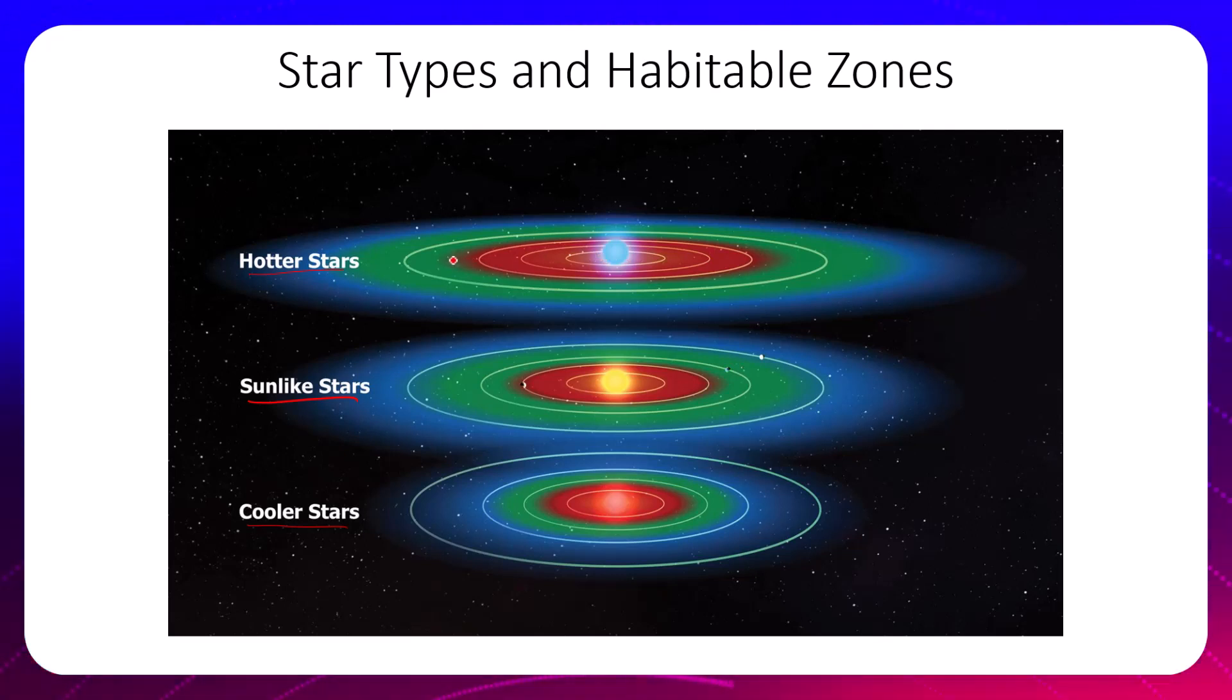It does reach farther, but the area associated with a hotter star is bigger in general. Sun-like stars obviously the temperature is cooled, and so this distance is going to decrease.